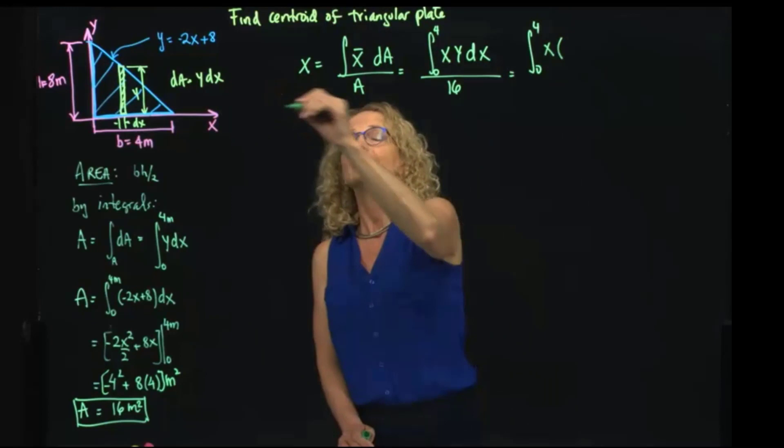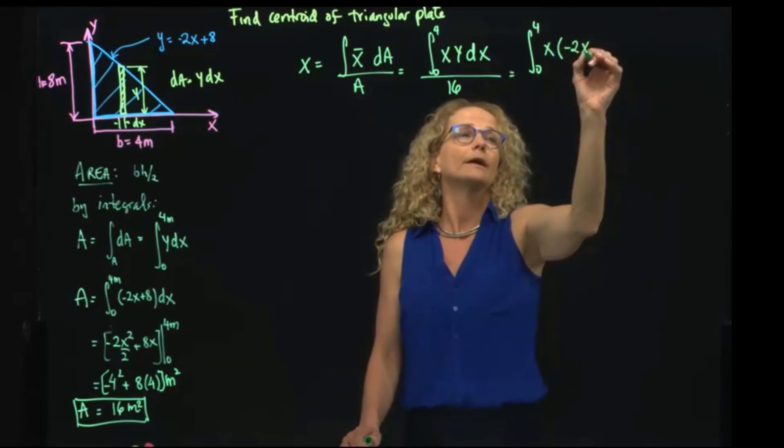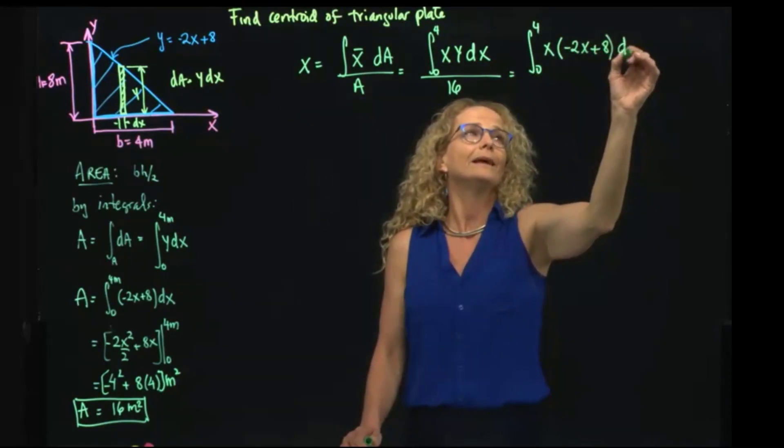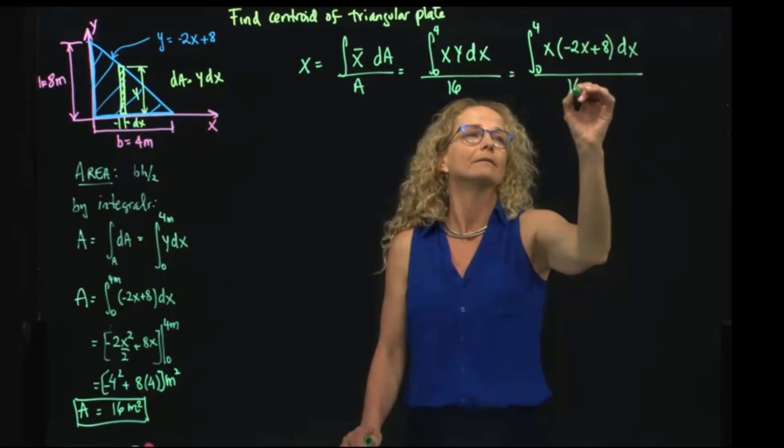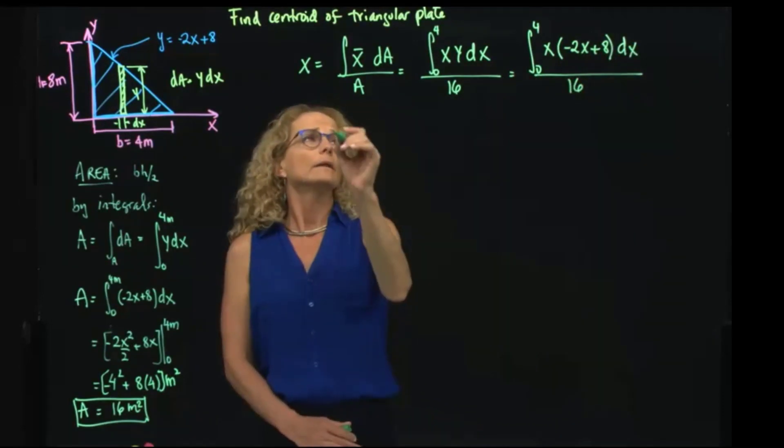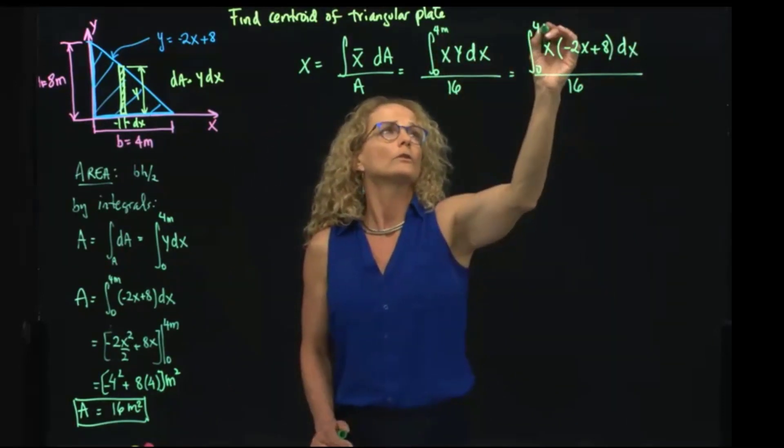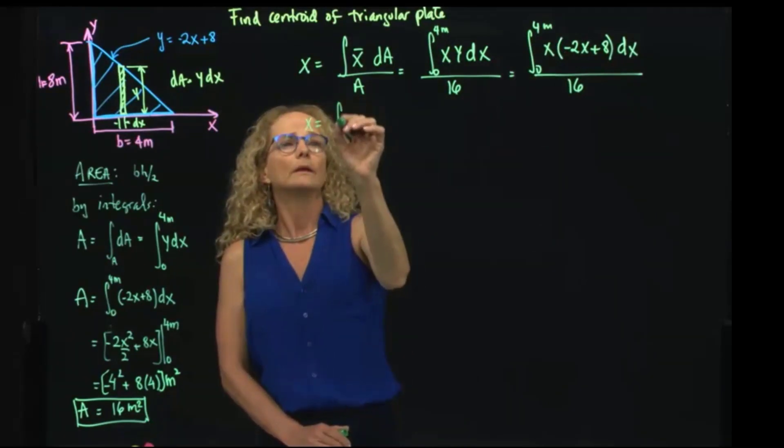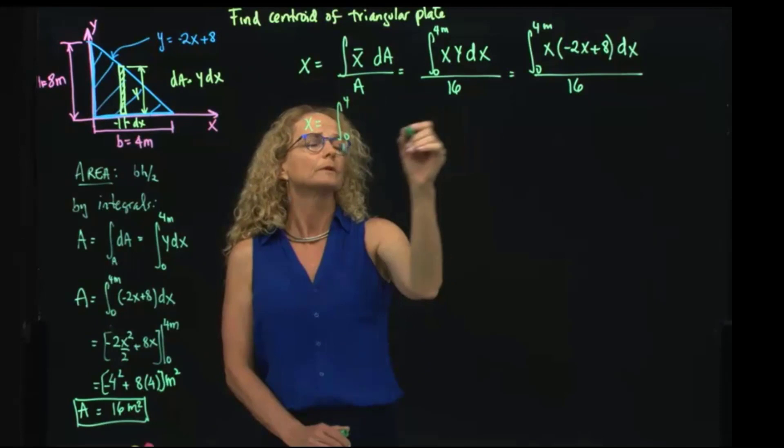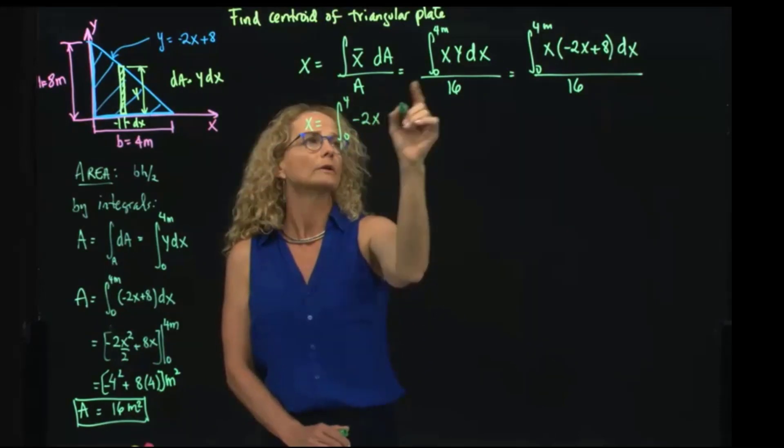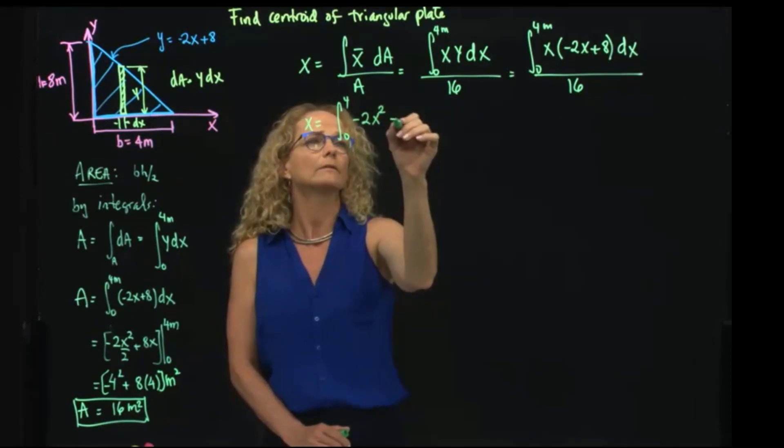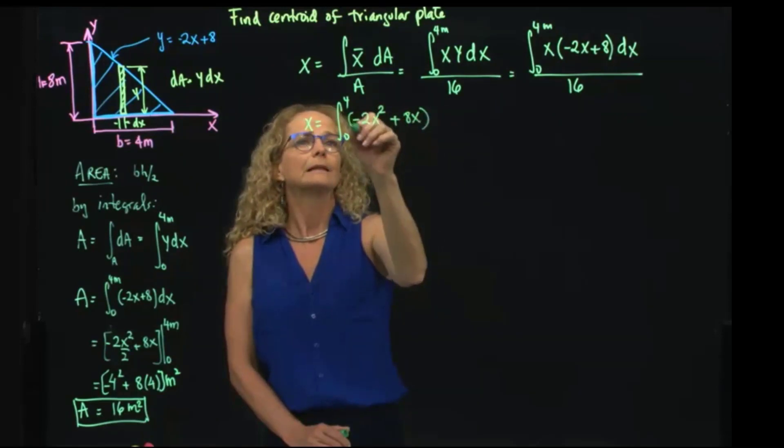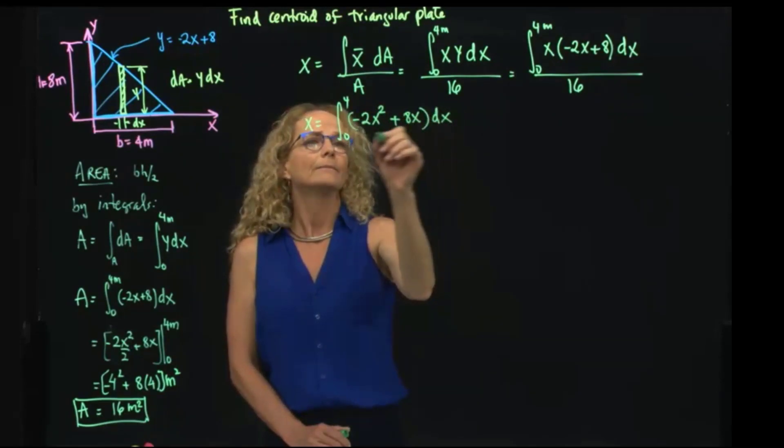I have to substitute my variables in terms of all the variable of integration. So I will substitute my Y that I have here, I will plug into here. So I will have X, and this is negative 2X plus 8, dX divided by 16.